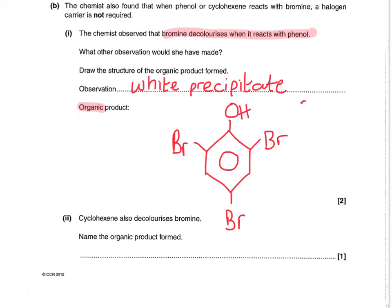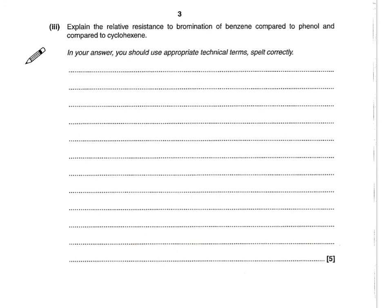Cyclohexene also decolorizes bromine — be careful here to switch your thinking over to cyclohexene, not phenol. If cyclohexene decolorizes bromine, that means two bromine atoms from Br2 will each add across the carbon-carbon double bond, giving us 1,2-dibromocyclohexane. It's a 5-mark allocation and says you should use appropriate technical terms spelt correctly. In the 2015 onwards specification, this would probably be a levelled question worth 6 marks.